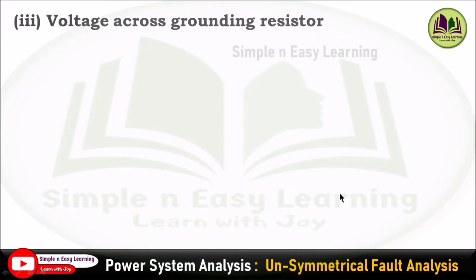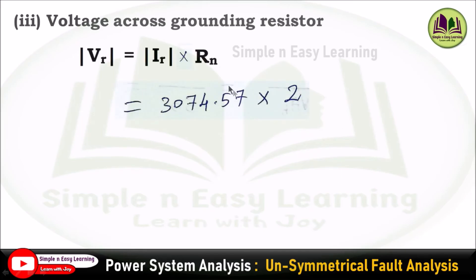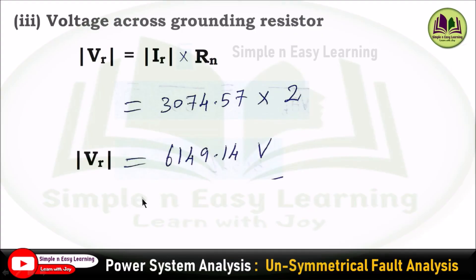Finally, determine the voltage across the grounding resistor. Knowing the current and resistance, simply multiply: VR = IR × Rn = 3074.57 × 2 ohm = 6149.14 volts.